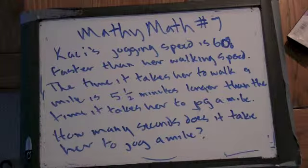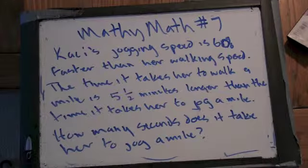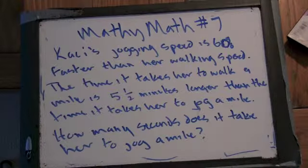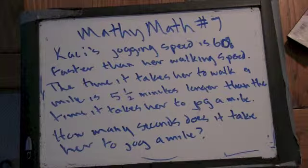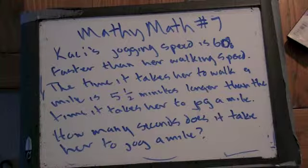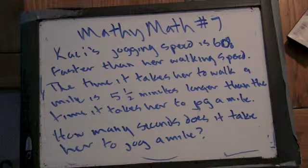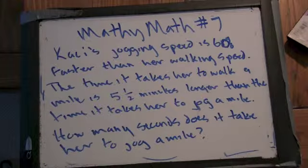I thought it was the running speed minus 60% of the running speed. Ah, no. Actually those are going to end up being different numbers. So that's a good question. Casey's jogging speed is 60% faster than her walking speed, so that means we're going to take her walking speed and then add 60% of it to get her jogging speed. Good question.